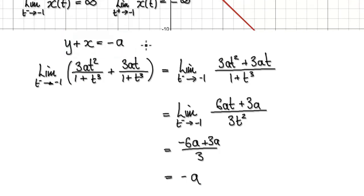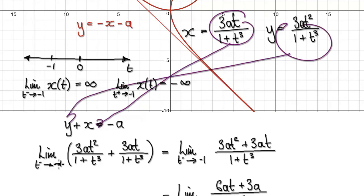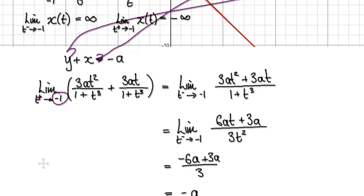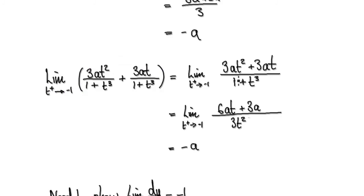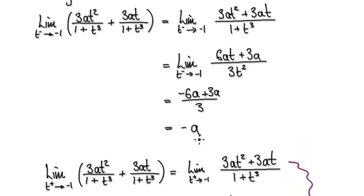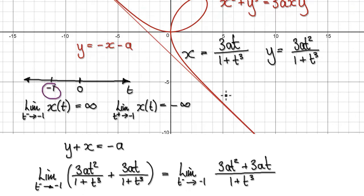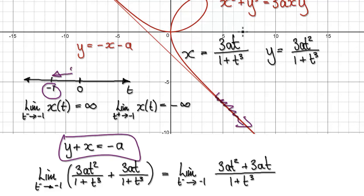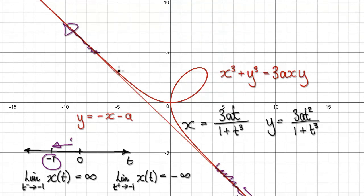Now do the same thing — put the expressions in and this time approach -1 from the right-hand side. Heading towards -1 from the right-hand side also leads us to -A. So as t heads towards -1 from both sides, the folium satisfies the condition and acts like this straight line. We've shown the first part.